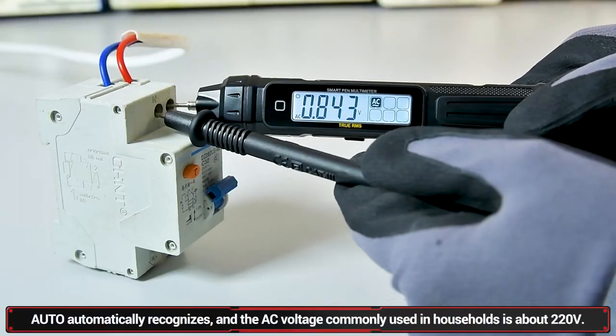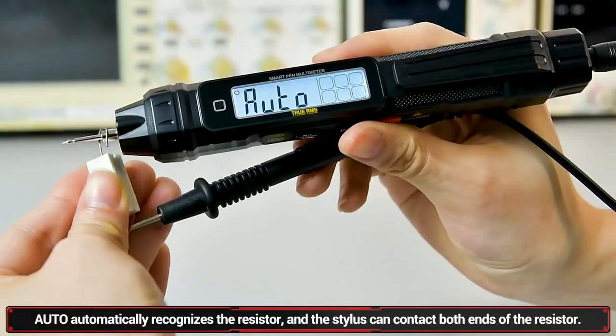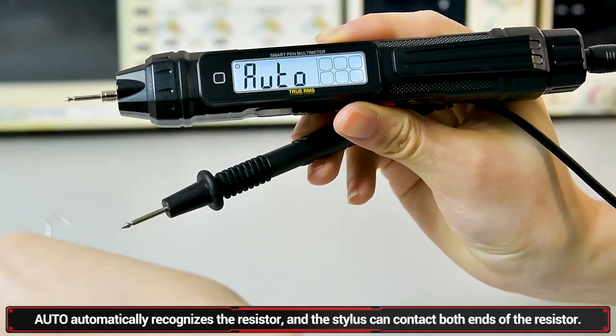AC voltage mode: This pen can contact the sensor for resistance.